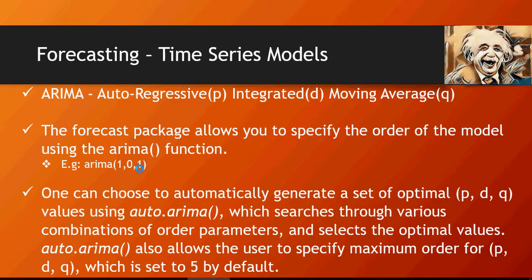So if you don't want to get into this, there is a simple auto.ARIMA model which searches through various different options and finds out the best suitable model for your data. It allows the user to specify maximum order which is 5 by default. So you can also specify your order or you can use auto.ARIMA to let the model select the best optimal solution or model for you.